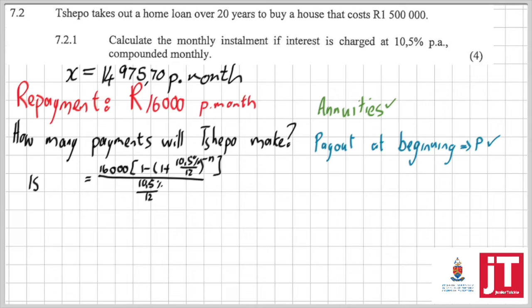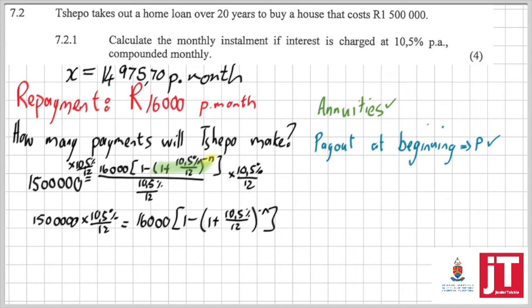Replacing the P with that 1.5 million, and now I'm going to try and isolate the bracket. So step by step, I'm first of all getting rid of the denominator. After I've done that, I am going to divide by the 16,000 on both sides.